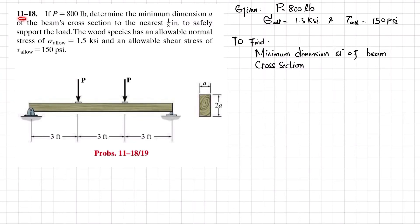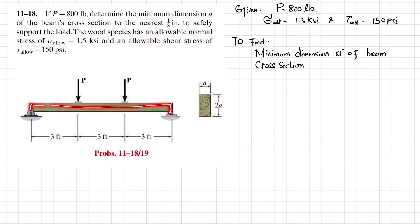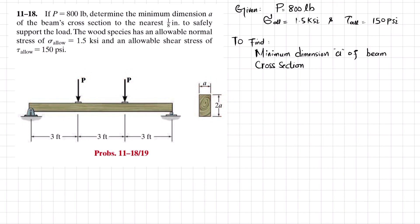Welcome back. Problem 11-18: if P is equal to 1800 pounds, determine the minimum dimension 'a' of the beam cross section to the nearest 1/8 inch to safely support the load. The wood species has an allowable normal stress of 1.5 ksi and allowable shearing stress of 150 psi. The cross section of the beam has width 'a' and total height '2a', with point loads at different positions.